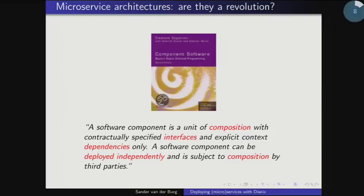And ten years before that paper, there was a book about component software. Basically it states that a component is a unit of composition with contractually specified interfaces and explicit context dependencies only. Components can be deployed independently and are subject to composition by third parties. So in my opinion, microservices aren't really a new revolution — but the good thing is that dividing a big monolithic system into components and making those components network-transparent is beneficial.